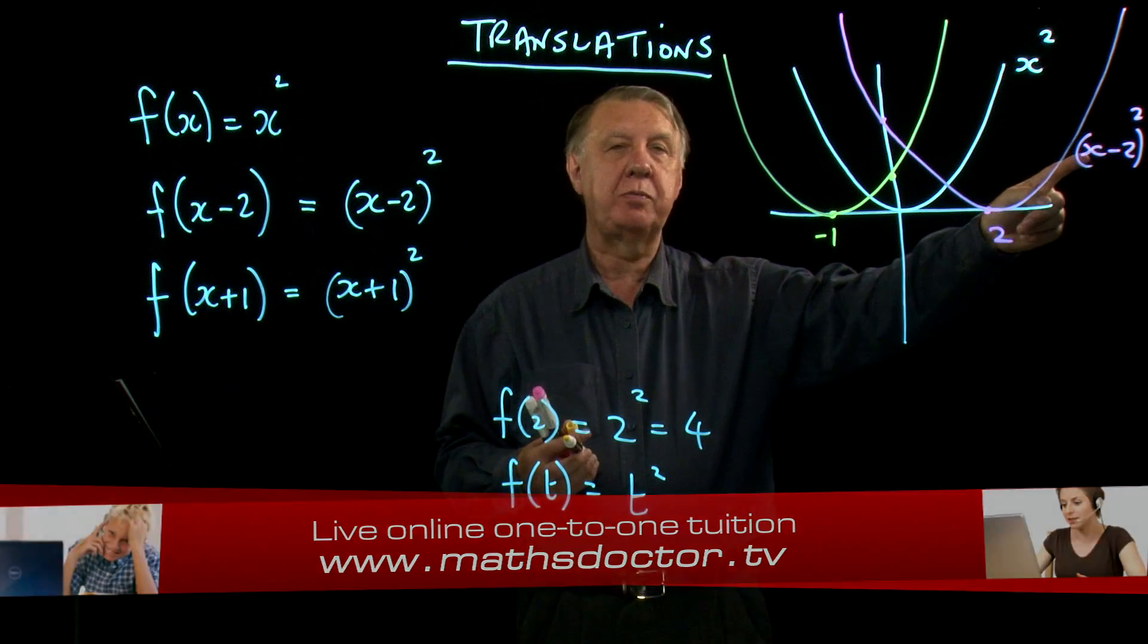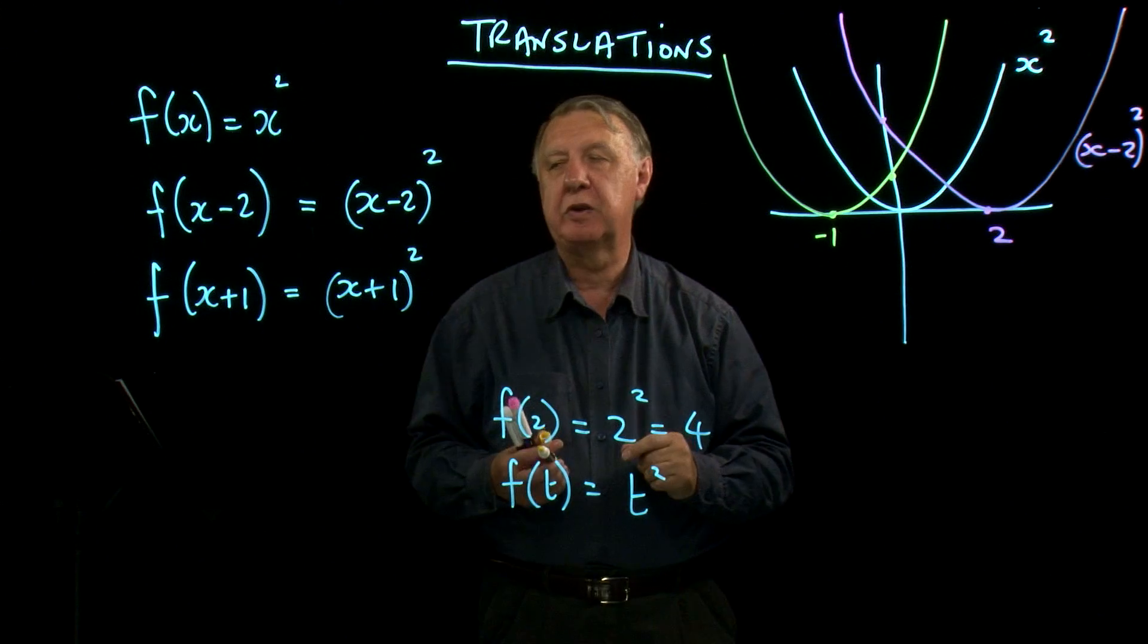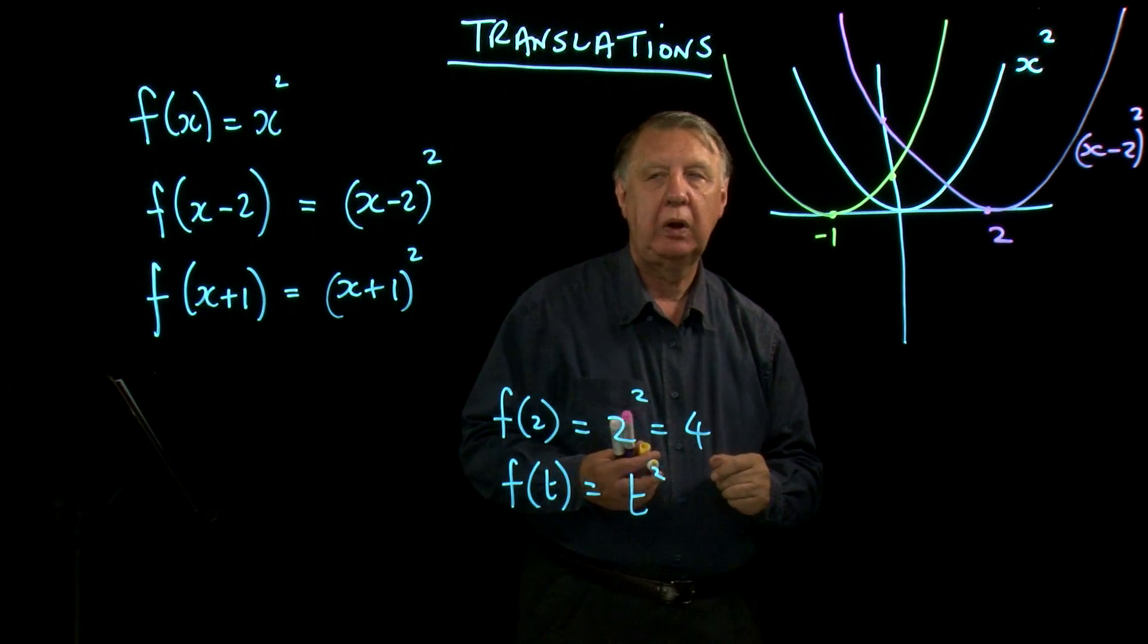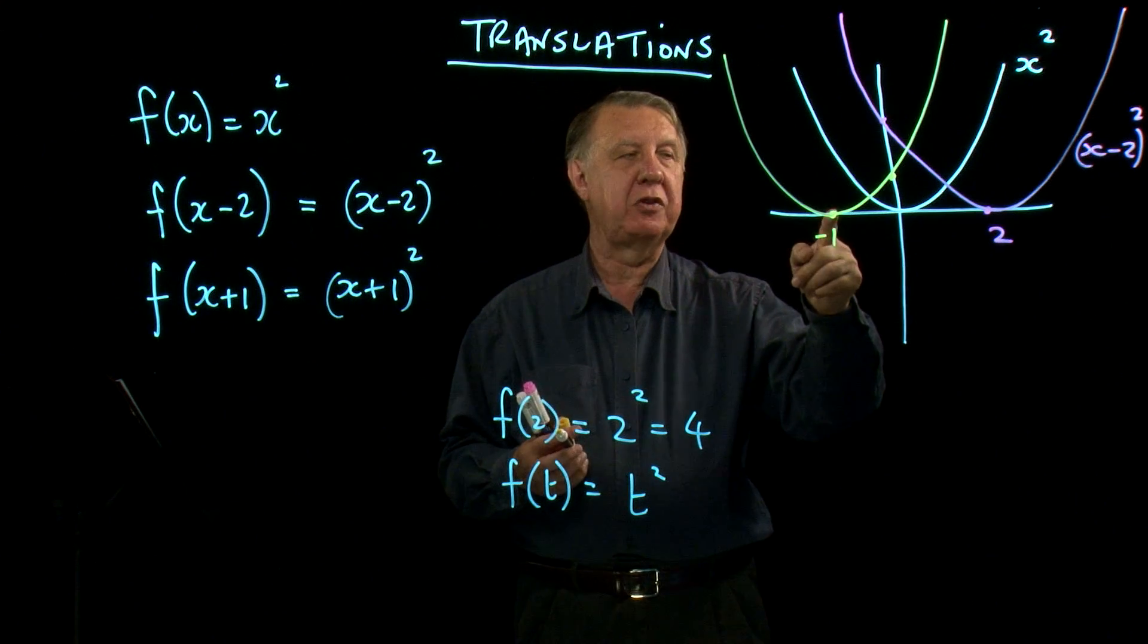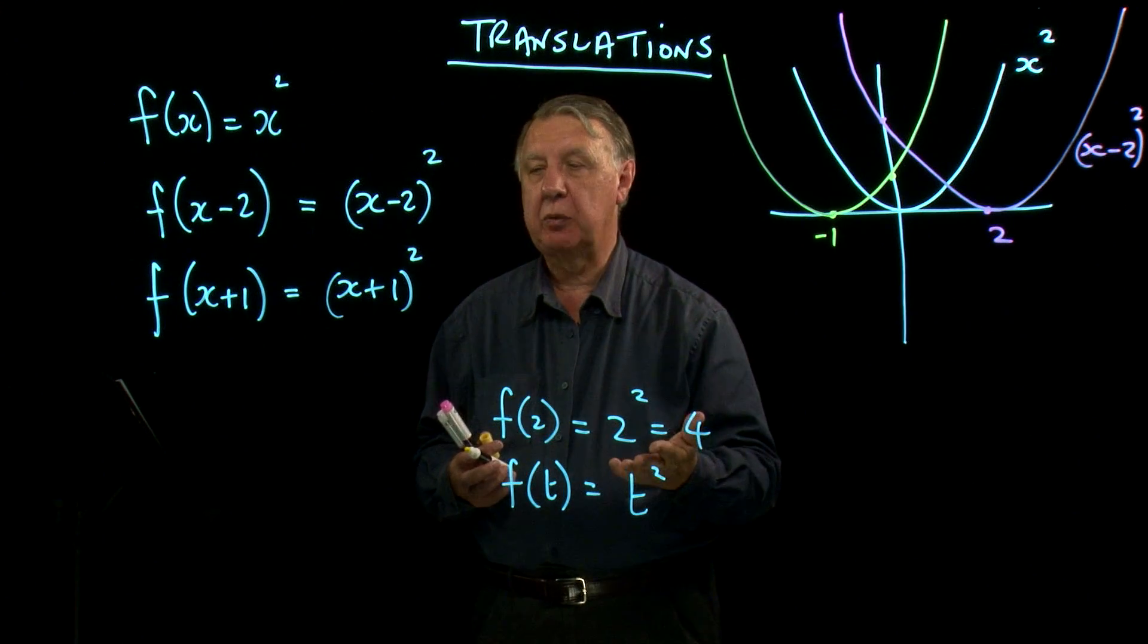So function x minus 2, the whole graph moved 2 to the right. Function x plus 1, the whole graph moves back by 1.